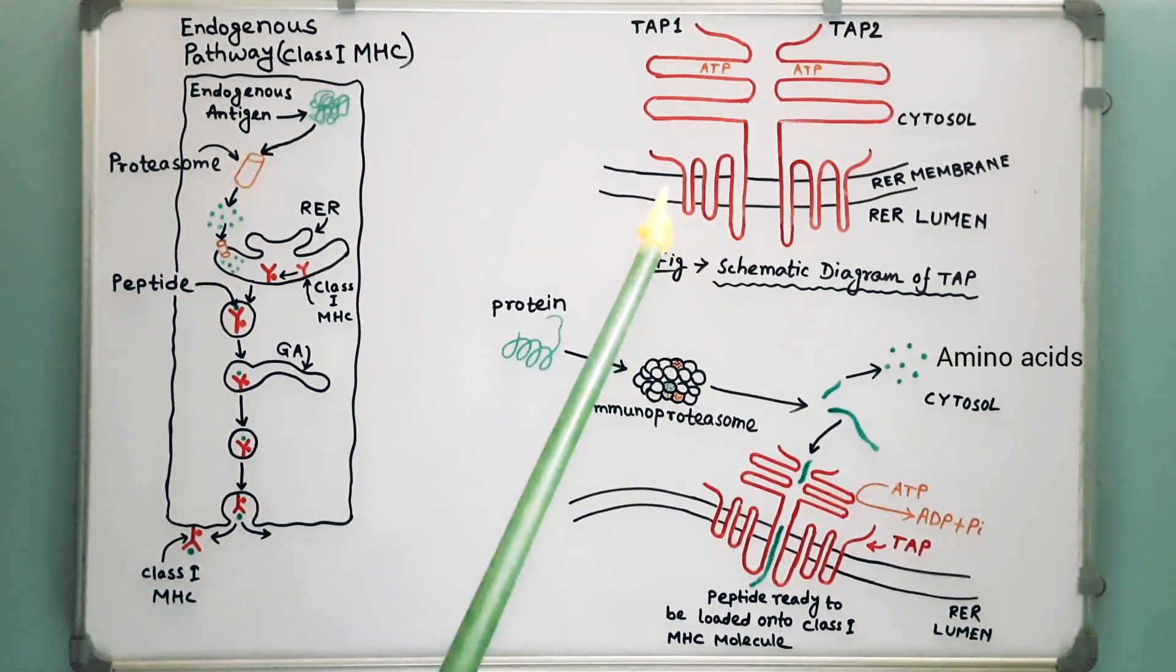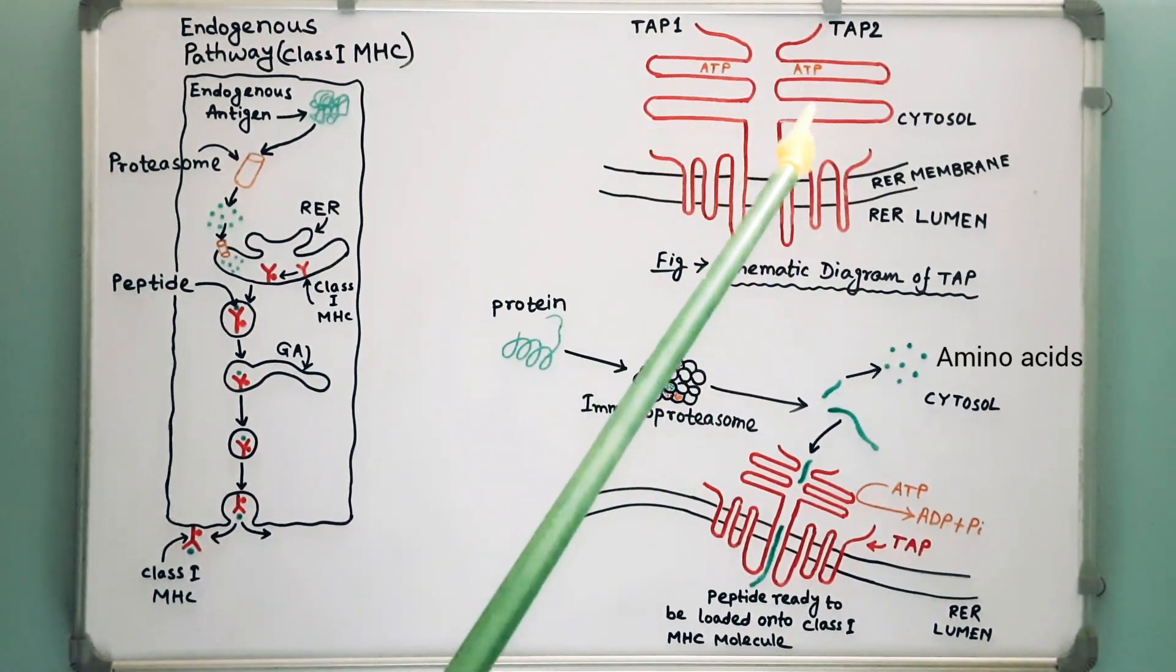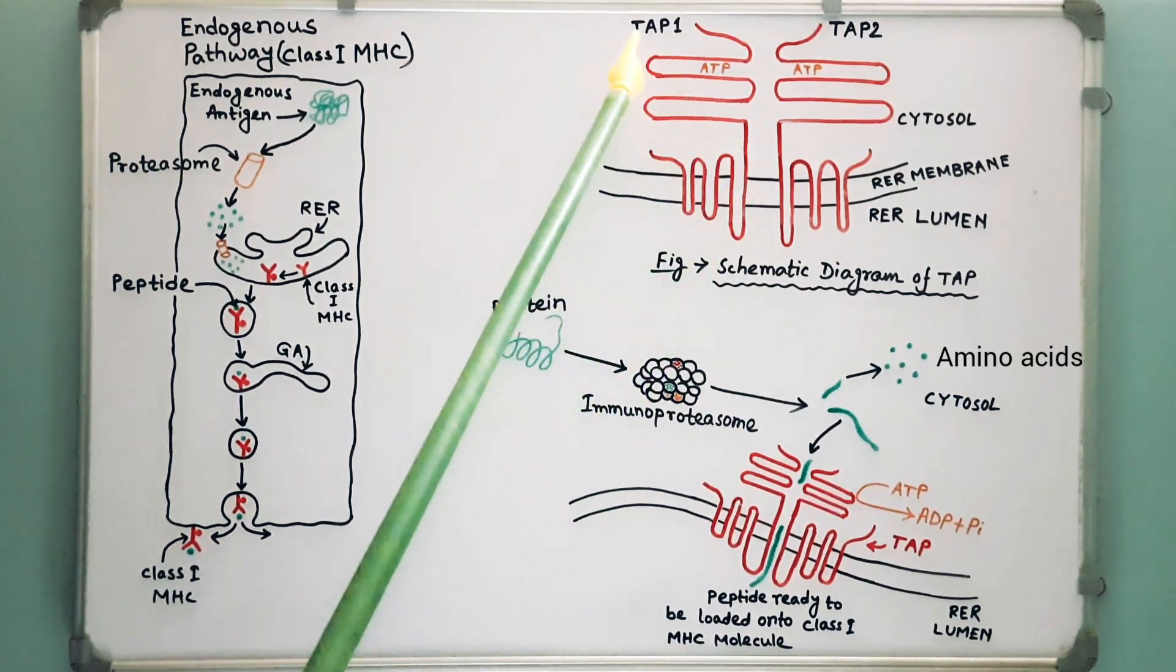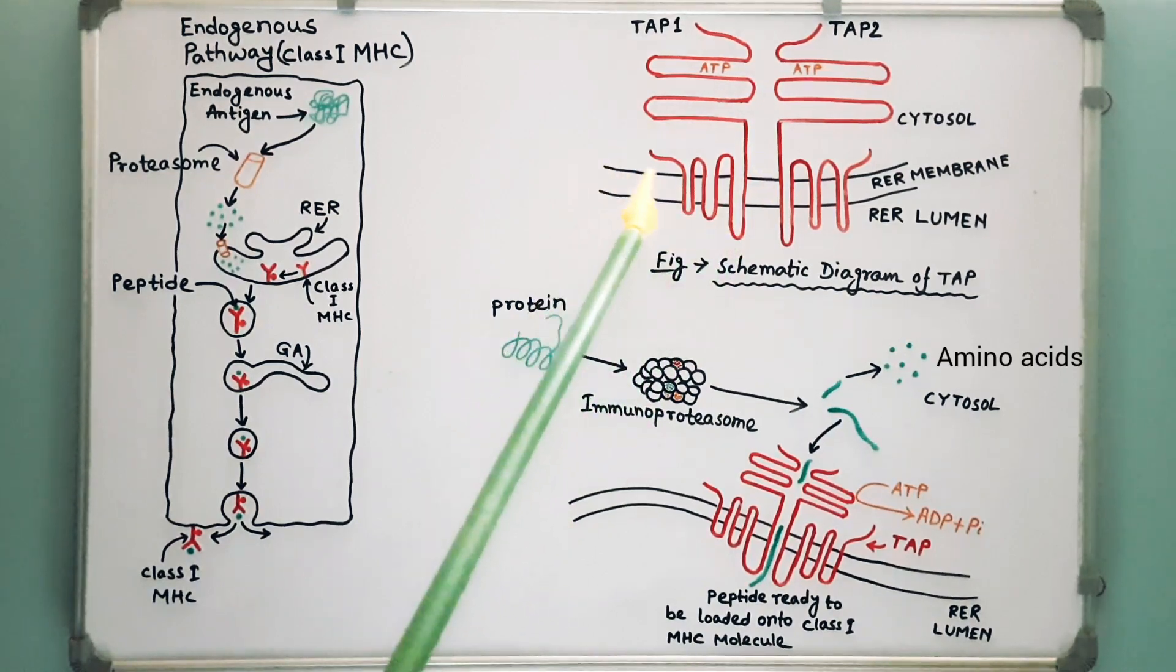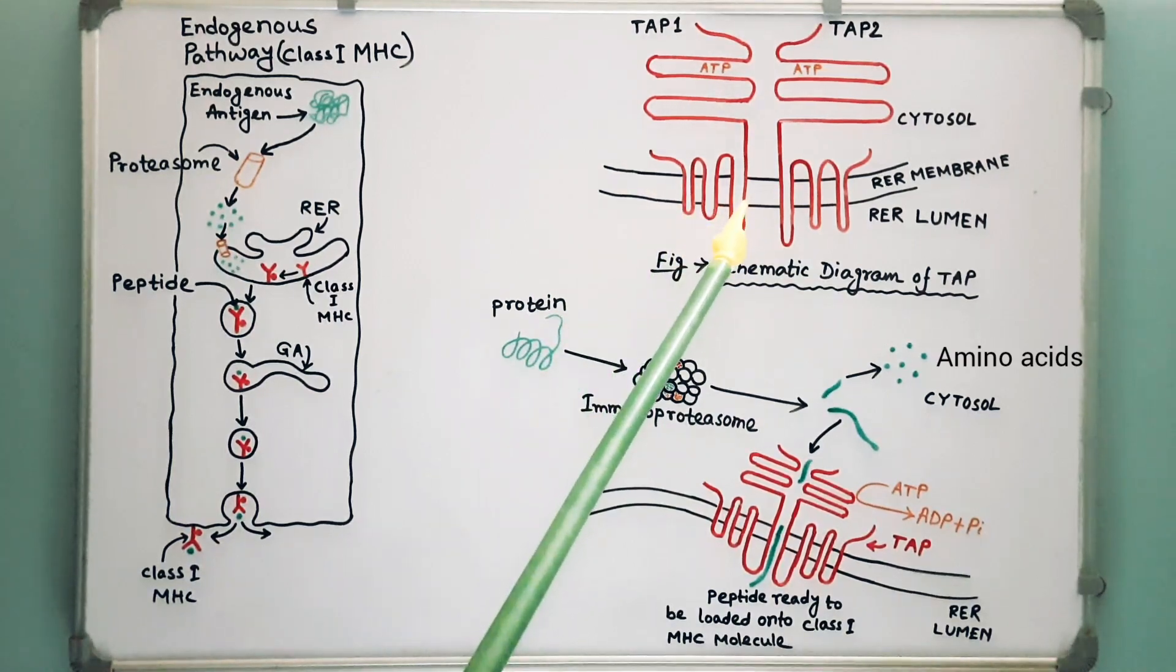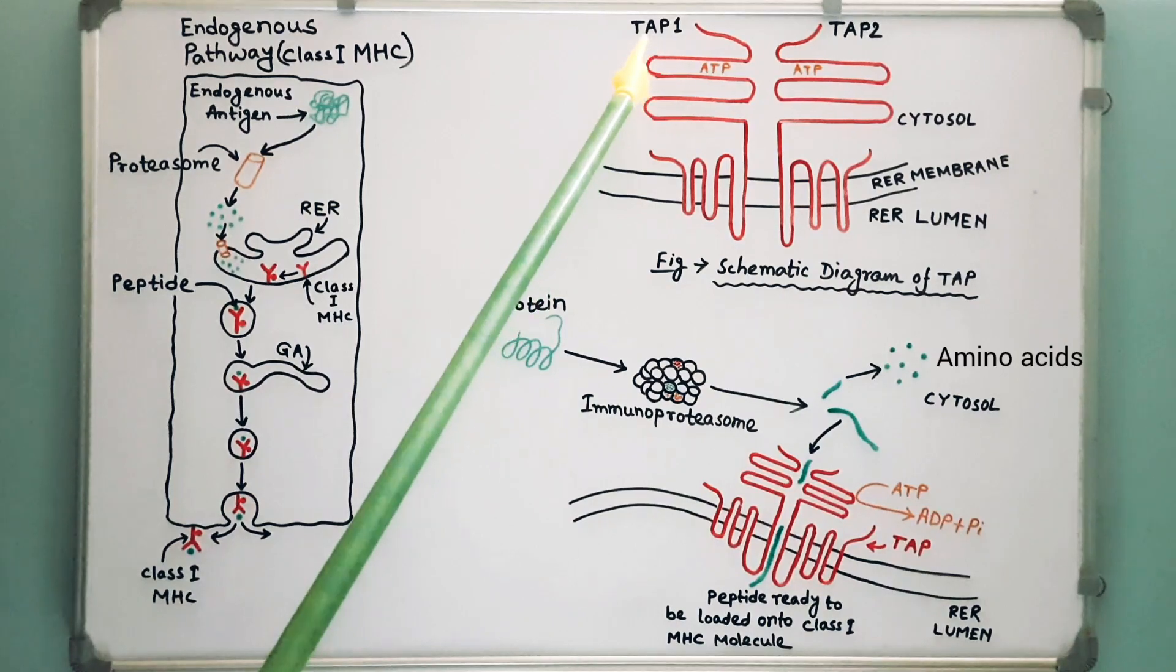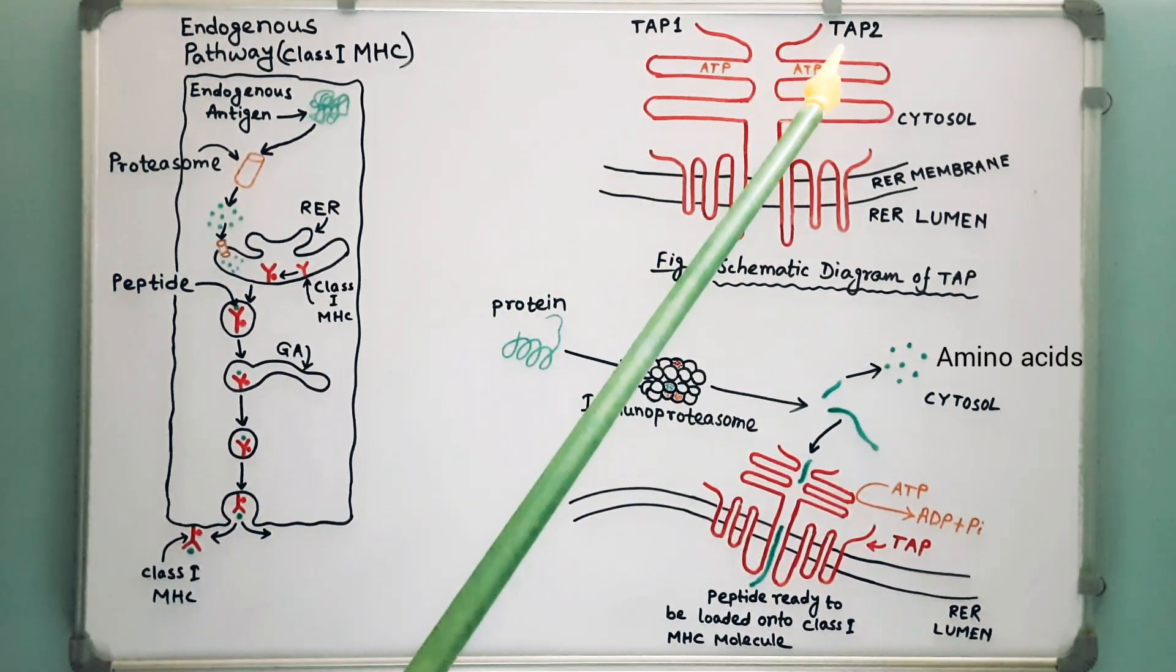This is a transporter protein known as transporter associated with antigen processing or TAP. This is a membrane-spanning heterodimer present on the membrane of rough endoplasmic reticulum. It consists of two proteins, TAP-1 and TAP-2.